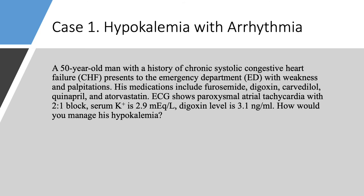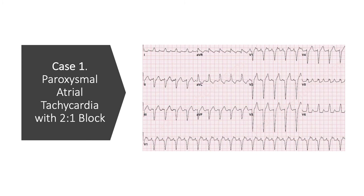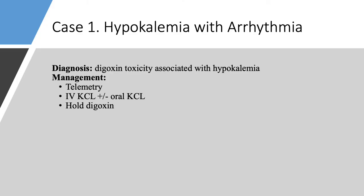Case number one: Hypokalemia with arrhythmia. A 50-year-old man with CHF presents with weakness and palpitations. He's on furosemide, digoxin, carvedilol, quinapril, and atorvastatin. EKG showed paroxysmal atrial tachycardia with 2-to-1 block. Potassium is very low at 2.9, and digoxin level is high at 3.1. The diagnosis is digoxin toxicity associated with hypokalemia causing arrhythmia. Management: put the patient on telemetry, give intravenous potassium chloride while starting oral potassium chloride, hold digoxin, and hopefully discontinue it permanently.